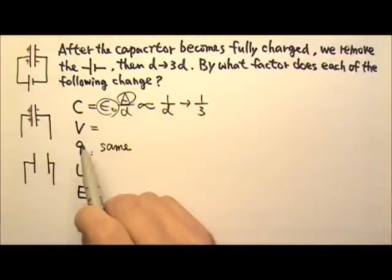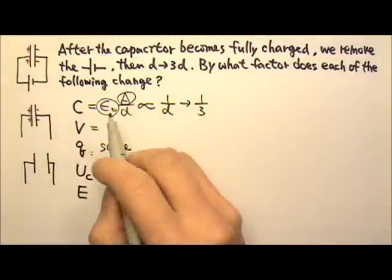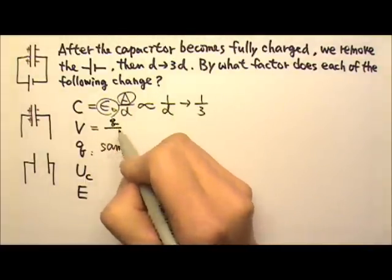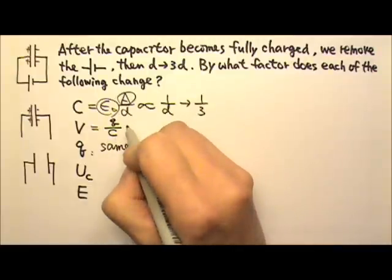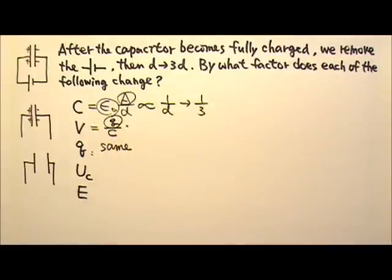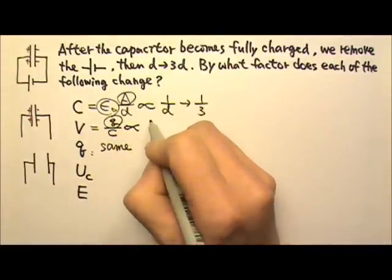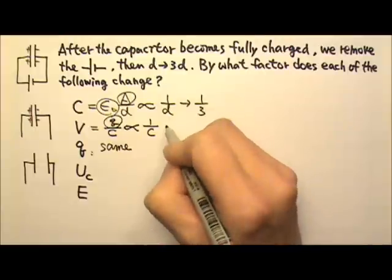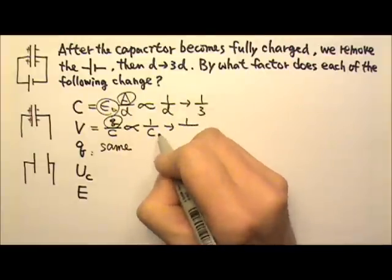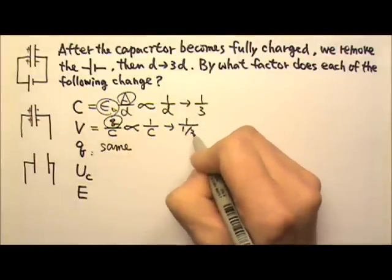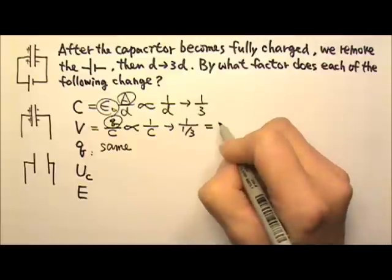Now let's look at the voltage. Since Q equals CV, that means the voltage equals Q divided by C. And Q now stays the same, so the voltage is proportional to 1 over C. Since C changes by a factor of one third, that means the voltage would triple.